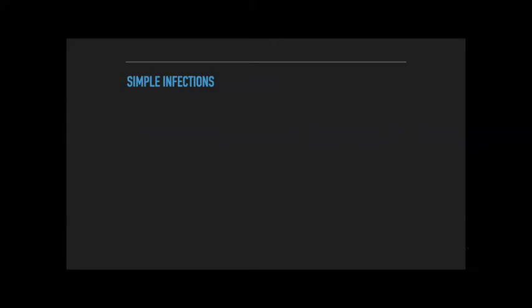Simple infections: we talked about wounds — you get a scrape, get some dirt in it, don't clean it well, and it gets red, hot, maybe a little pussy with purulent discharge. Hopefully things resolve on their own, but they might not. Cough, cold, flu; urinary tract infection; gastrointestinal — these are all simple infections where very often young, healthy people without underlying pathologies will suffer from these things and get better on their own. Most of us have had an infected wound. So what are the stages of sepsis?